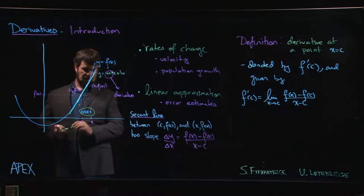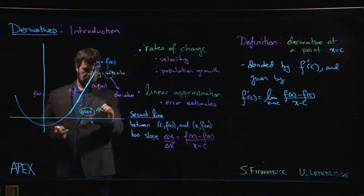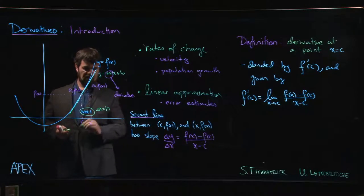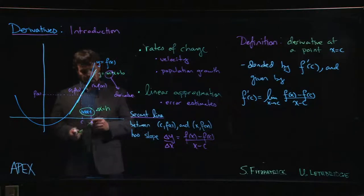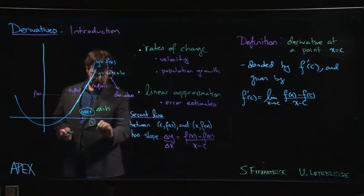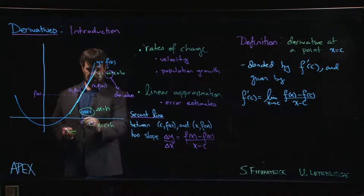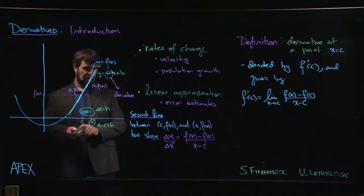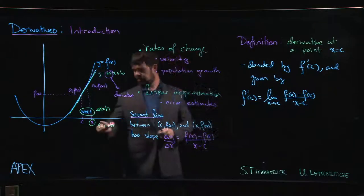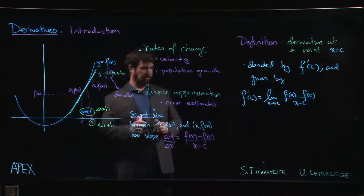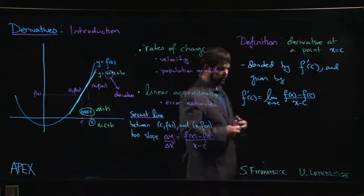So we'll use h to denote this change, and that means that this x here, x is then c plus h. It's the original point plus a little bit. And so the other way to say that x is approaching c is to say that this difference is going to zero, and so we could also write this as the limit as h approaches zero.